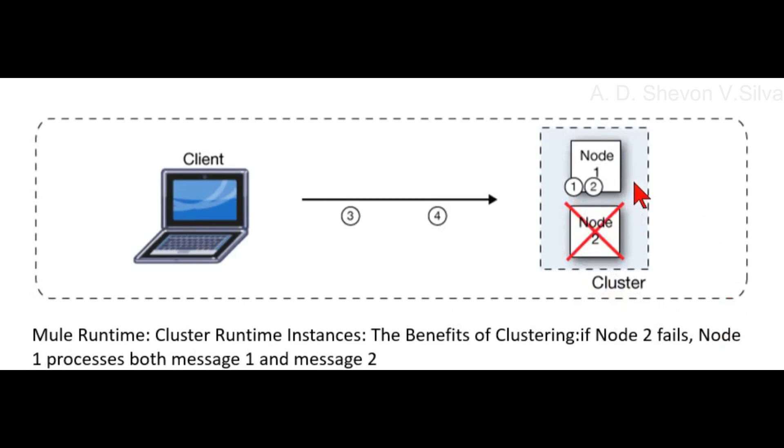In Mule runtime cluster instances, the benefits of clustering are demonstrated. If Node 2 fails, Node 1 processes both message 1 and message 2. If one node fails, the other available nodes pick up the work of the failing node, as shown in the following figure.